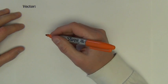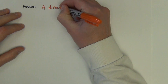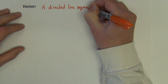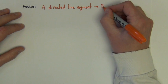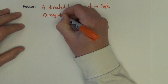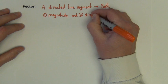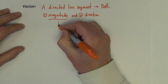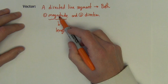First, let's define what a vector is. A vector is a directed line segment. All vectors have two things: they have both a magnitude and they have a direction. When we talk about magnitude, we're just talking about length.